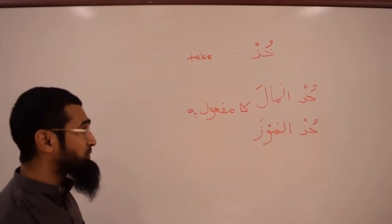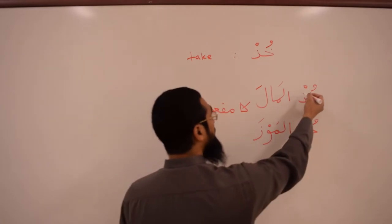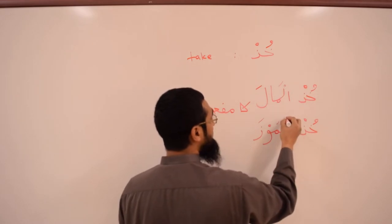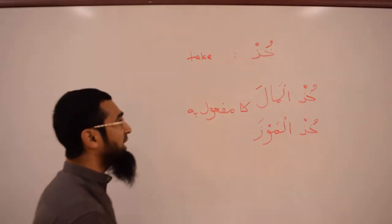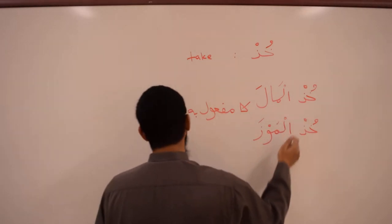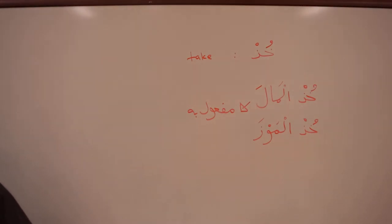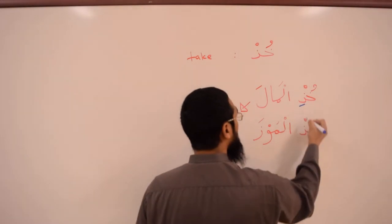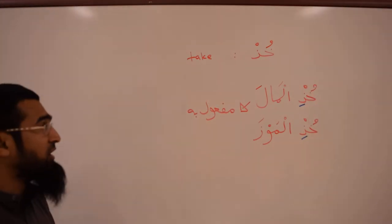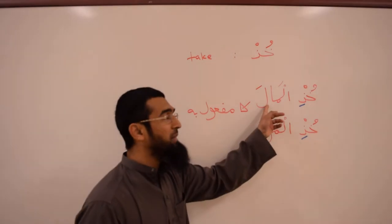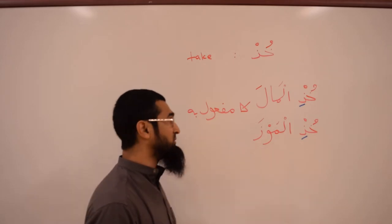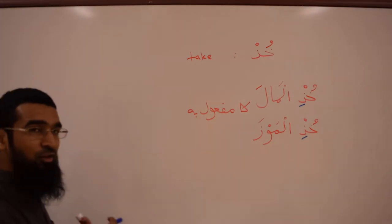Something you need to know: whenever there is a sukun under khud, and then there is a lam that also has a sukun — as in al-mawz or al-mal — in the Arabic language the sukun becomes a kesra, but only in pronunciation. So you say: khudi al-mal, khudi al-mawz. This happens because it flows better.